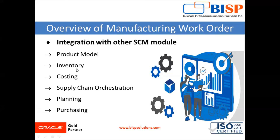For Inventory, sub-inventories, locators, serials, lots, and on-hand quantities are referenced from inventory. For Costing, manufacturing cost management is performed by work order in the costing module. In Oracle Supply Chain Orchestration, it creates supply in Oracle Manufacturing Cloud — for example, sales orders for back-to-back work orders and configure item work orders. Planning Central creates work orders as supply during the supply planning run. For Purchasing, contract manufacturing and outside manufacturing are enabled through purchasing. In this way, the manufacturing application is integrated with other SCM modules.